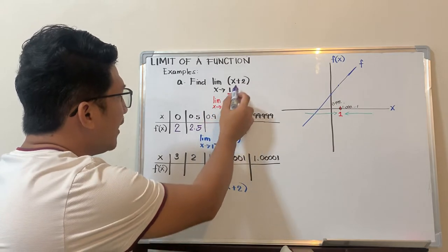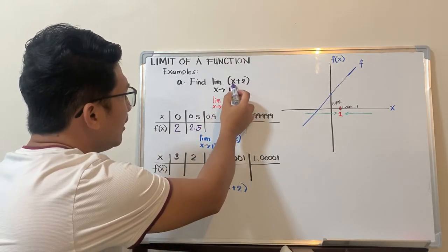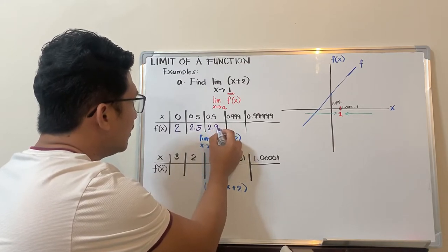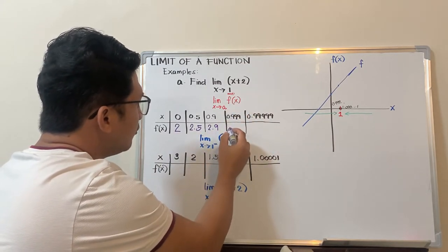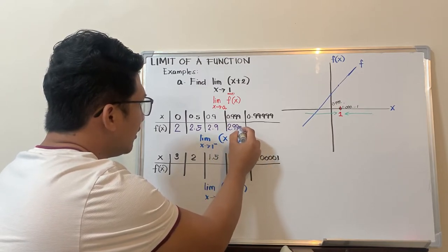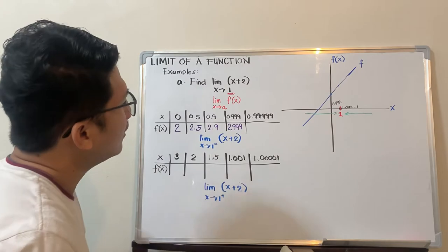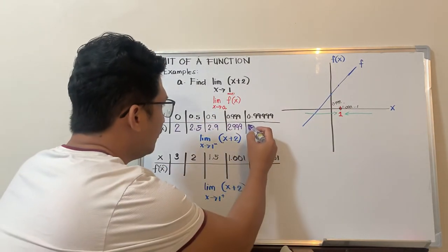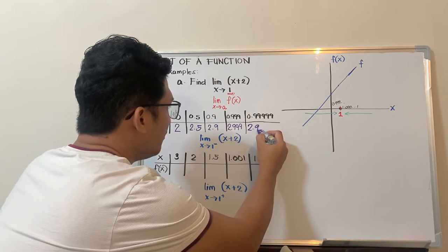0.9 plus 2, that should be 2.9. 0.999 plus 2, that should be 2.999. You can use your calculator. And 0.9999 plus 2, you have 2.9999.